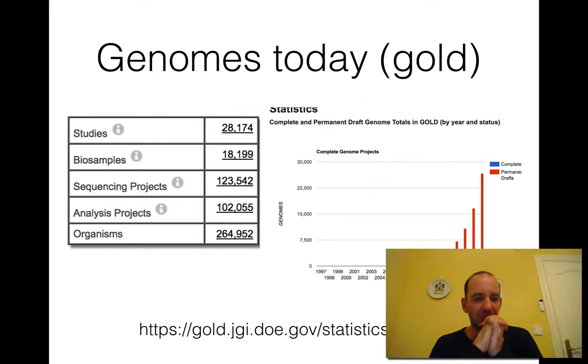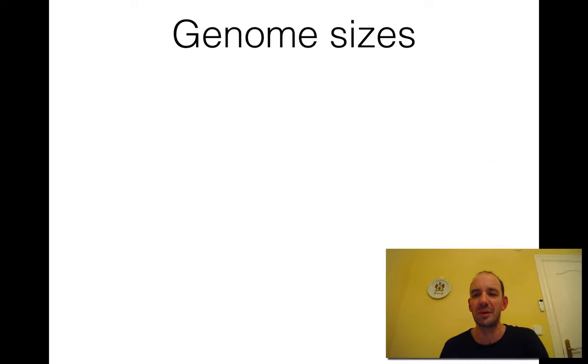Today, there are actually 28,000 human sequences. There are more than 100,000 genome sequencing projects, and there are more than 264,000 organisms being sequenced. We are sequencing a very large part of all the organisms that we know about. There are more than 10,000 permanent drafts generated this year, and thousands of complete genome sequences. These are called the GOLD database of genomes.